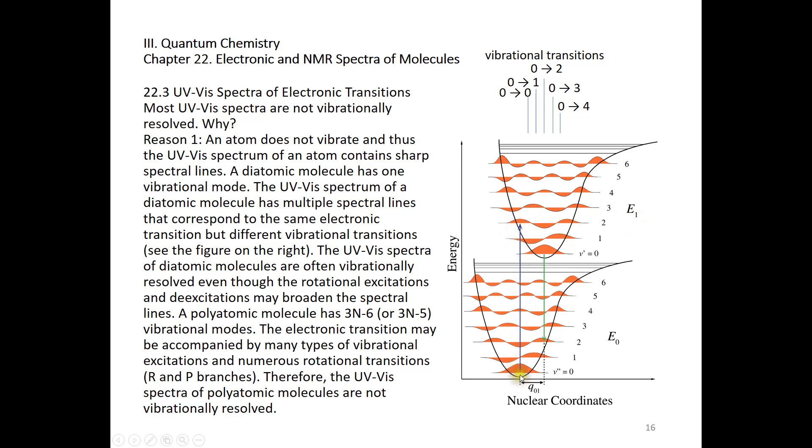And now if we look at this vertical transition, we can go from this vibrational quantum number 0 to 0, from 0 to 1, from 0 to 2, from 0 to 3, or to 4 to 5. So the same electronic transition is accompanied by many different vibrational transitions.